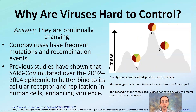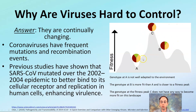So, why are viruses hard to control? The answer is they're continually changing, they're continually mutating. Coronaviruses have frequent mutations and recombination events. They're constantly going through changes in the hopes that they'll become better fit for the environment, and we hope to create conditions that will reduce their fitness. Prior studies have shown that SARS mutated over the 2002–2004 epidemic to better bind to cellular receptors. They're constantly changing, which makes them difficult to pinpoint and control.